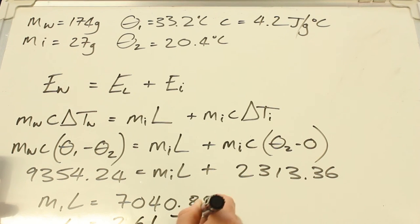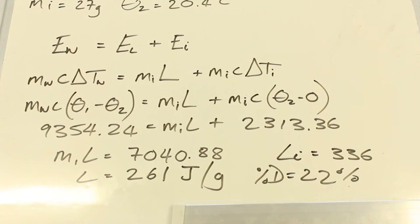261 joules per gram. And the stated value of the latent heat of fusion of ice is 336 joules per gram. So it's not too bad really for lab conditions. That's 22% difference.